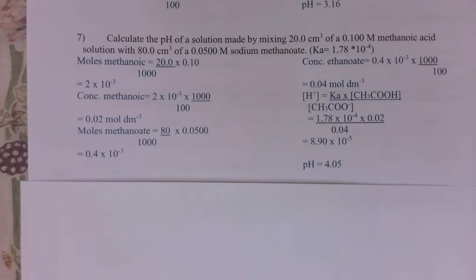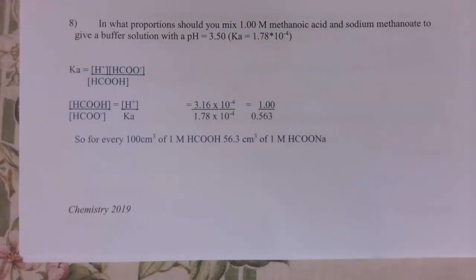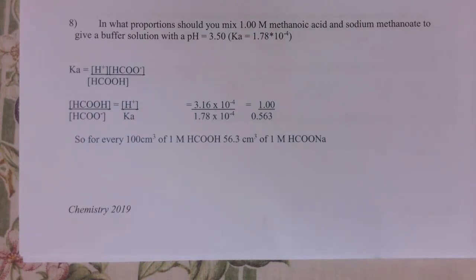Question 7 is done the same way as the mixing example: work out the new concentrations after dilution from 20 and 80 cm³ up to 100 cm³ total, then substitute into the Ka expression to get a pH of 4.05. The last question is a proportions question again — finding the ratio of acid to salt. For every 100 cm³ of methanoic acid you would need 56.3 cm³ of the salt, which could also be expressed as 10 to 5.63 or 1 to 0.563 depending on the volume of buffer needed.